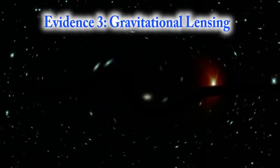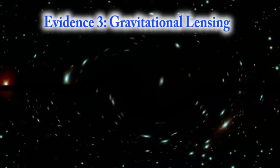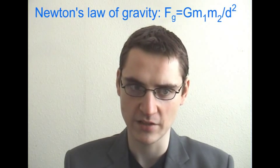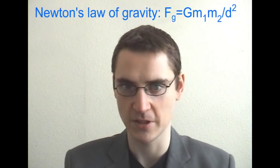The third piece of evidence is what we call gravitational lensing. All I have told you about gravity up to this point is based on Newton's law of gravity. Newton's law states that gravity is a force that attracts objects that have mass towards each other, and hence does not affect light, which is essentially massless.